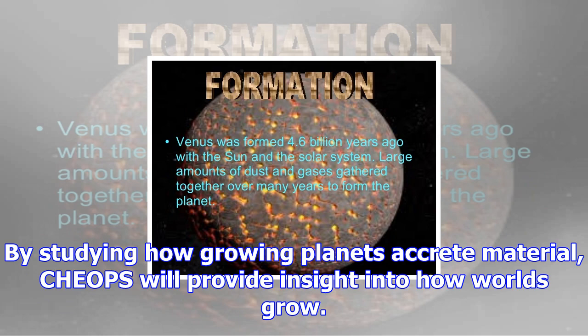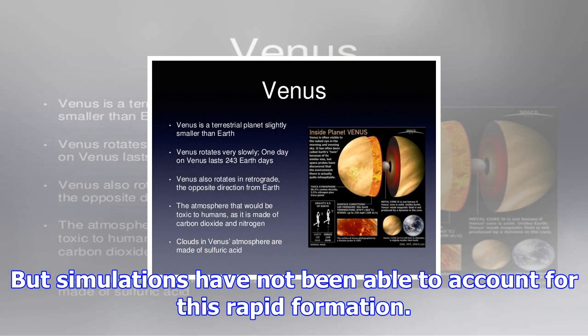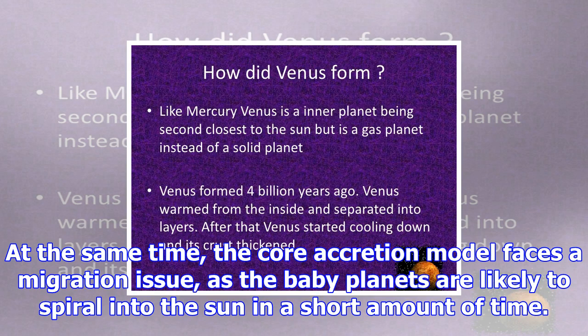In the core accretion scenario, the core of a planet must reach a critical mass before it is able to accrete gas in a runaway fashion, said the CHEOPS team. This critical mass depends upon many physical variables, among the most important of which is the rate of planetesimal accretion. By studying how growing planets accrete material, CHEOPS will provide insight into how worlds grow. Although the core accretion model works fine for terrestrial planets, gas giants would have needed to evolve rapidly to grab hold of the significant mass of lighter gases they contain.